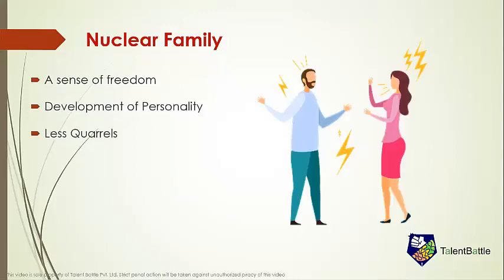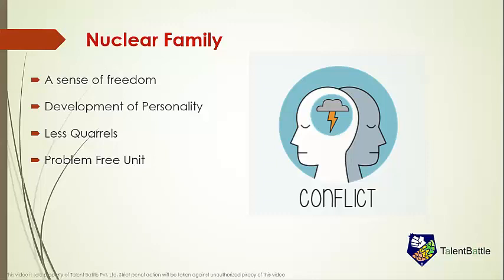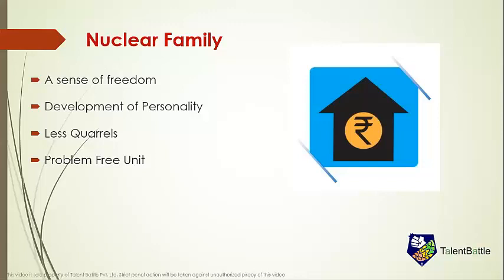Less Quarrels: nuclear families face fewer quarrels when compared to the joint family. Usually they are small quarrels between a husband and wife or a child and the parents. It's easy to convince everyone in the family when taking decisions. Problem-free Unit: there is no chance of in-law conflicts. Financial problems usually do not arise in a nuclear family. Money can be saved for future investment and to face uncertain crises. All enjoy independent life and can be engaged in any economic activities to supplement the family income. The will and desires of the children are considered and given proper weight.